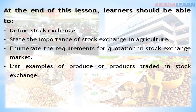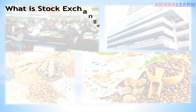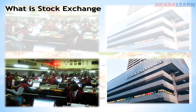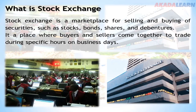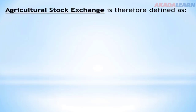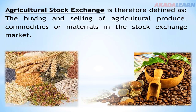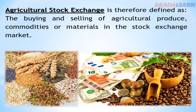We are now talking about agricultural produce or products. What is stock exchange? Stock exchange is a marketplace for selling and buying of securities such as stocks, bonds, shares and debentures. It is a place where buyers and sellers come together to trade during specific hours on business days. Agriculture in stock exchange is therefore defined as the buying and selling of agricultural produce, commodities or materials in the stock exchange market.